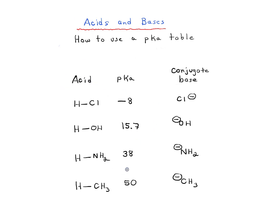Here I've drawn a very simplified pKa table with different acids: HCl, water, NH3, and methane, along with their pKa values. HCl is about minus 8, water is about 16, NH3 is 38, and methane is 50. I also have drawn their conjugate bases: Cl⁻, OH⁻, NH2⁻, and CH3⁻. We'll use this simplified table and show how to apply it to larger pKa tables later.